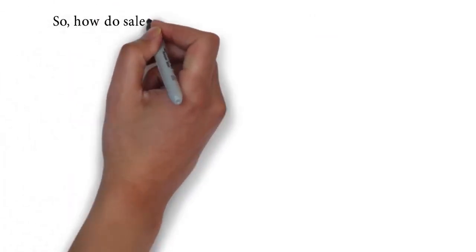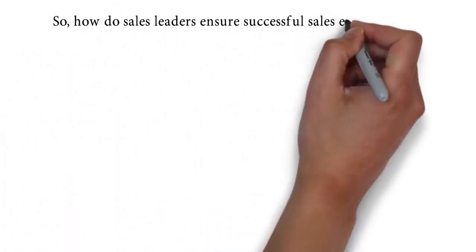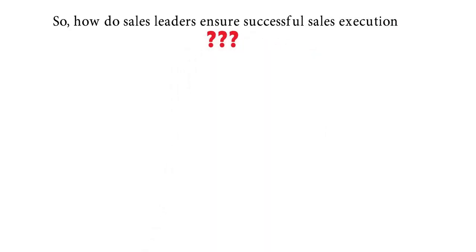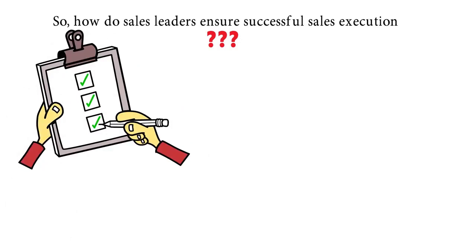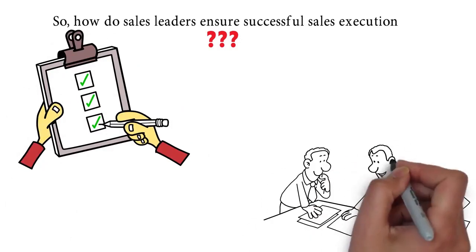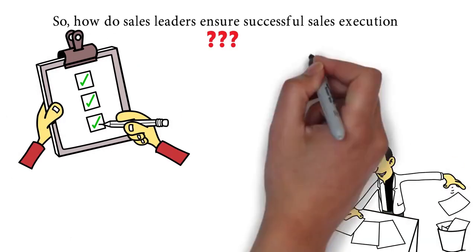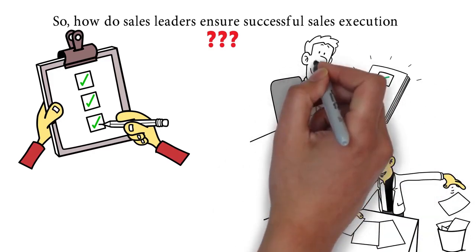So, how do sales leaders ensure successful sales execution? To start, sales leaders know they must prioritize to drive the right mix of initiatives, focus on outcomes by creating discipline, and ensure individual contributors have what they need for success.